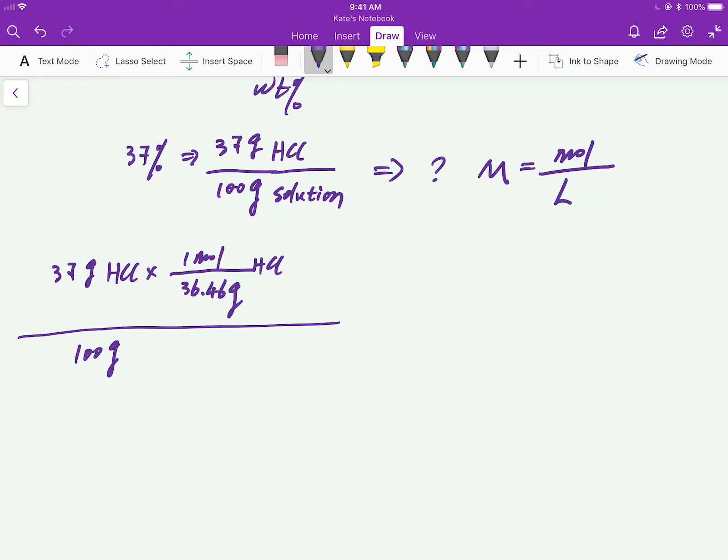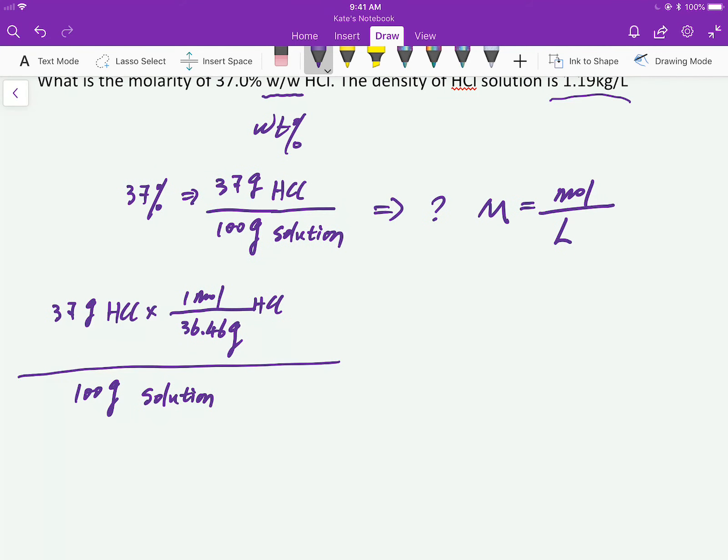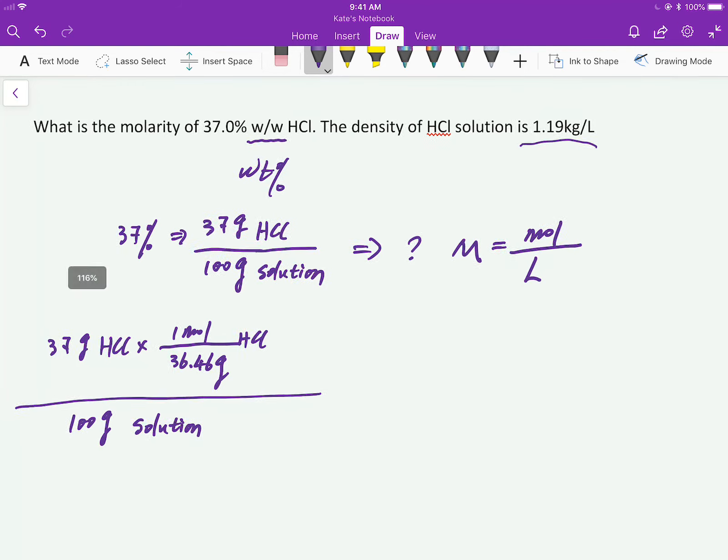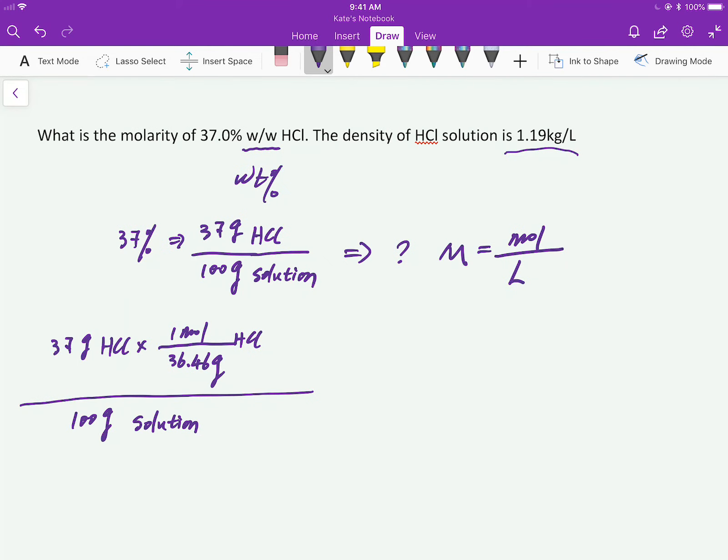And 100 grams solution. The density here is given, so we cannot assume it's one gram per mL anymore. And especially, just think about 37 weight percent hydrochloric acid is very strong concentration. And it's given as 1.19. If the density is not given, then you can assume it's one gram per mL.